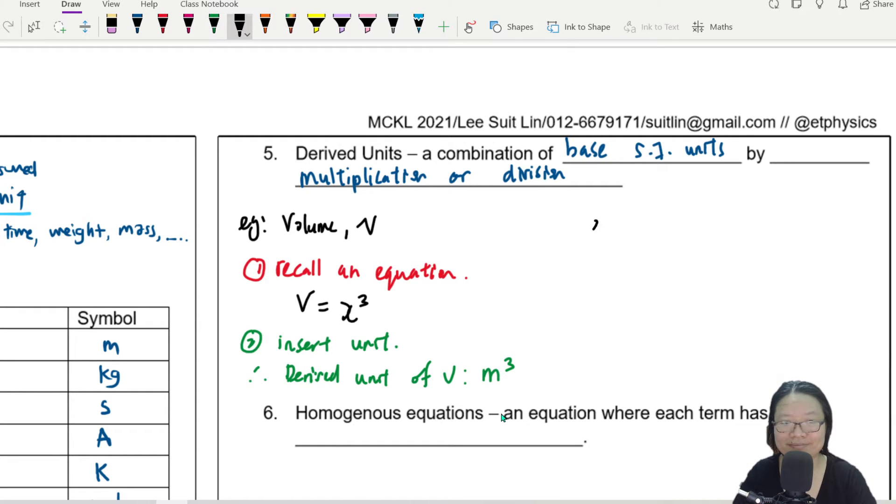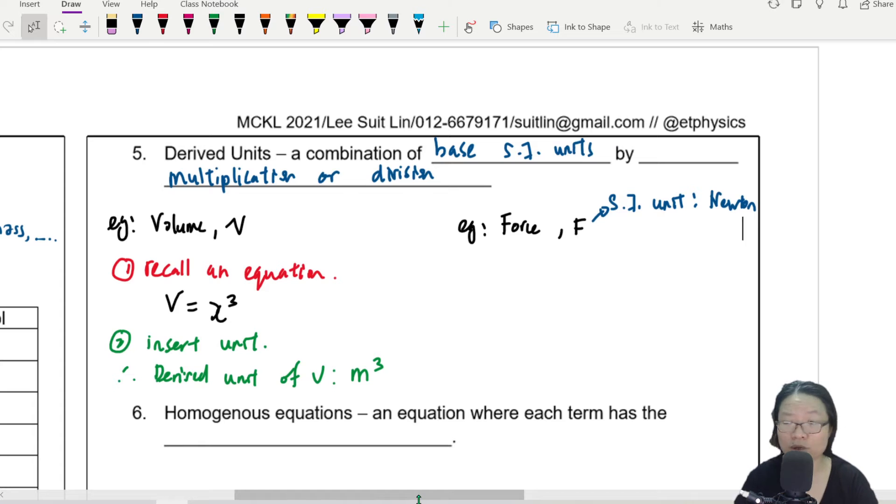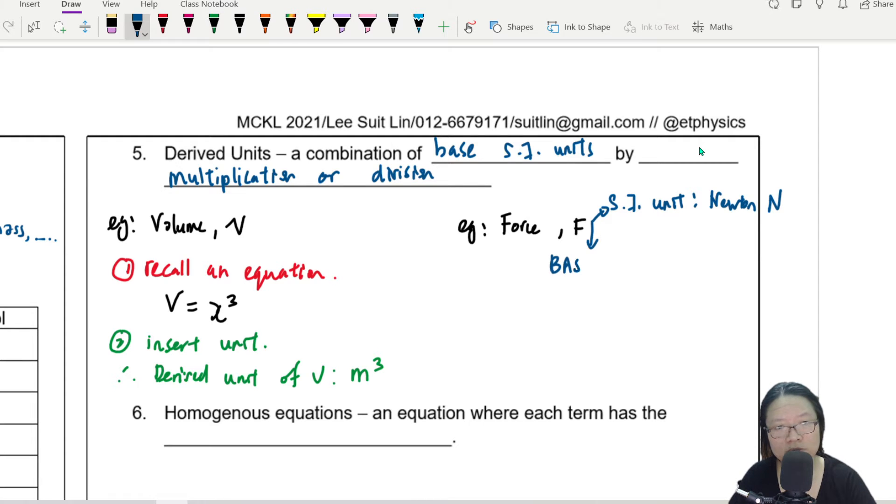Let's do another example. Let's say we talk about force, symbol F and you might be thinking, teacher, the SI unit for force is Newton, correct? SI unit, not base SI, but SI unit is Newton. That British dude during lockdown who invented calculus, that Newton. So SI unit is Newton, but base SI unit, when you see the word base, it has to be only the seven.